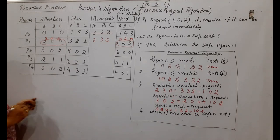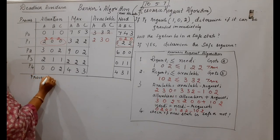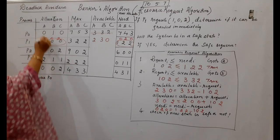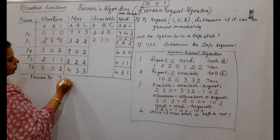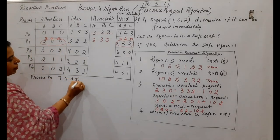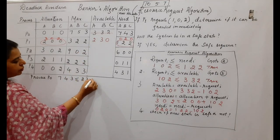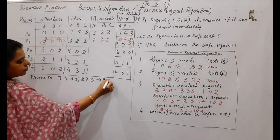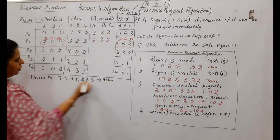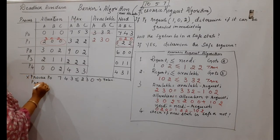With these updates, begin the safety algorithm starting with P0. P0's need is 7,4,3 — check if it is less than or equal to available 2,3,0. This is false, so P0 cannot complete yet. Move to P1.